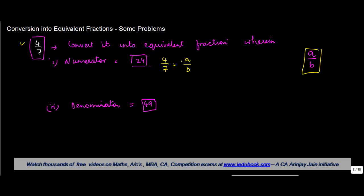But we are asked that we have to find such a fraction which is equivalent to 4/7 where the numerator is 24, or the value of a is equal to 24, and then you have something called b.